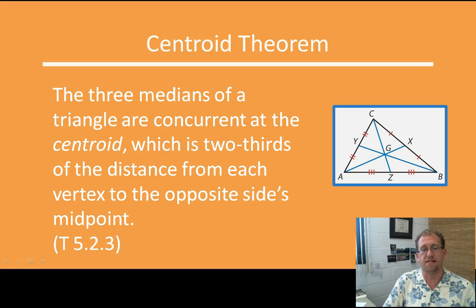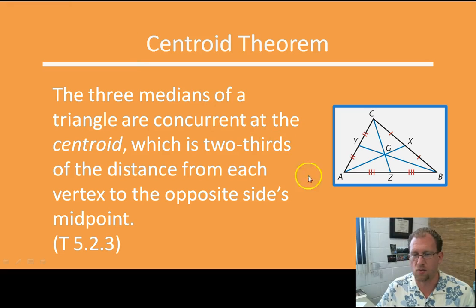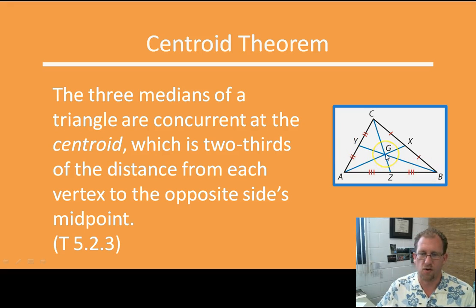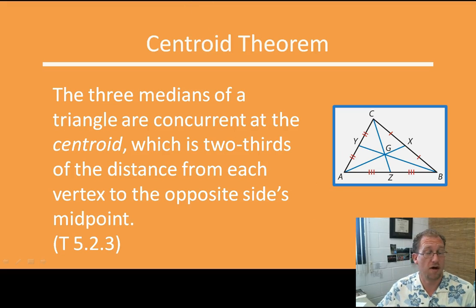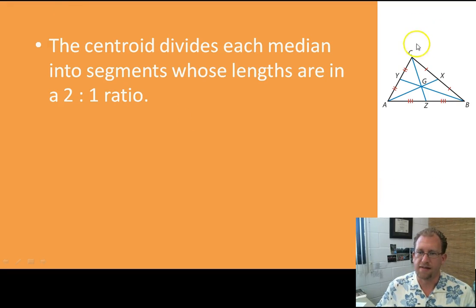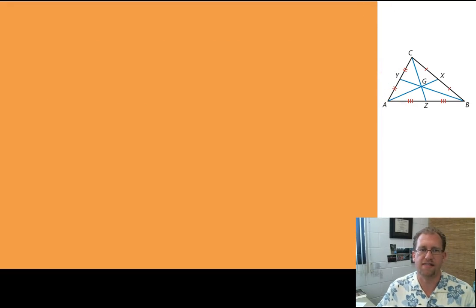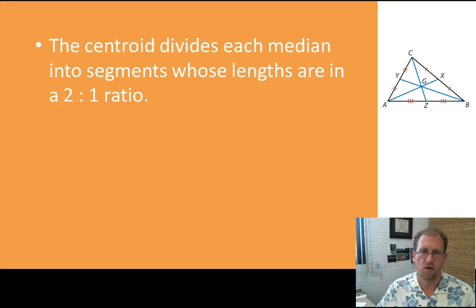The centroid theorem states that the three medians of a triangle are concurrent at the centroid, which is two-thirds of the distance from each vertex to the opposite side's midpoint. So all three medians meet at point G. The ratio of the shorter segment to the longer segment on each median is one-to-two — the shorter side is half the longer side. The centroid divides each median into segments whose lengths are in a two-to-one ratio, and that's true for every triangle.